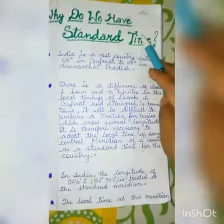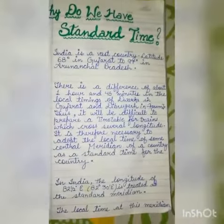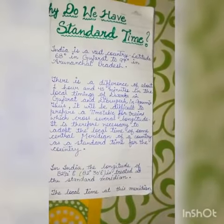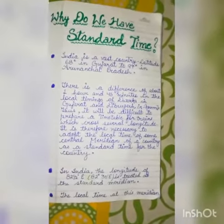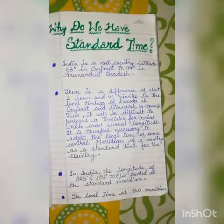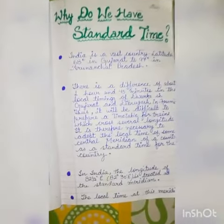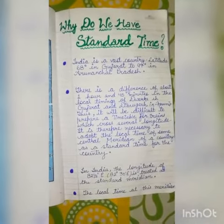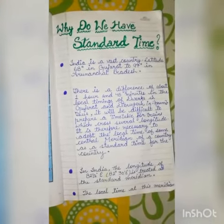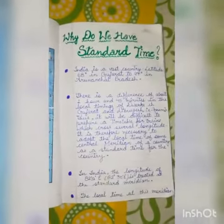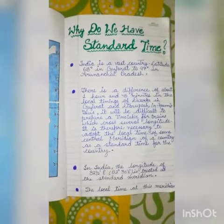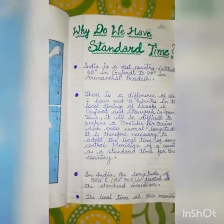Why do we have standard time? The local time is based on the meridian of a place and it is different on different meridians. There would be confusion if all the places on different meridians follow their own local time. It will be difficult to prepare and follow the timetable for the smooth functioning of railways, airways, etc., as they have to cross several meridians.